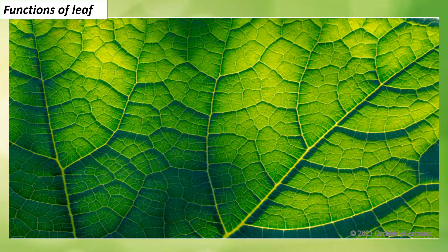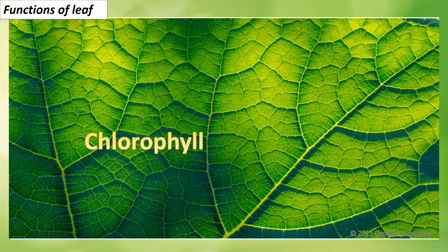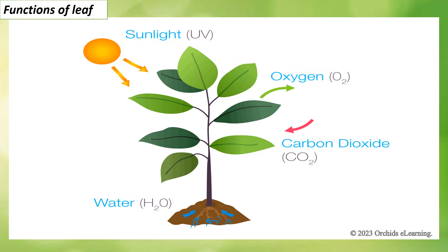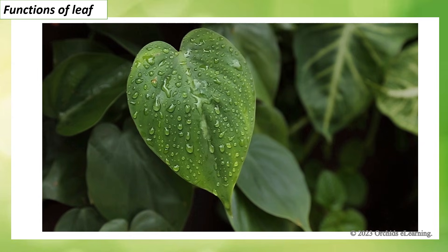Functions of a leaf: a leaf performs various important functions for the plant. It is usually green due to the presence of a green pigment called chlorophyll. A leaf prepares food for the plant through photosynthesis — the process of making food using carbon dioxide, water, chlorophyll, and light. Plants store food in leaves, fruits, and stems in the form of starch.